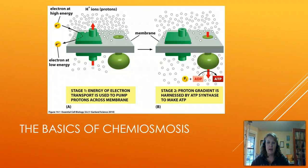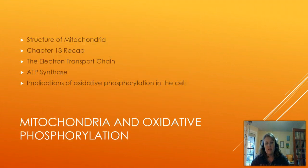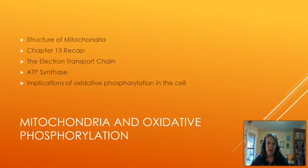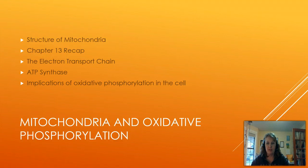This should be what you got out of your Biology 201 and other early biology classes. Now let's talk about the mitochondria and oxidative phosphorylation. For the rest of the topic, we're going to review the structure of the mitochondria, revisit chapter 13 to make sure we're all on the same page, then dive into the electron transport chain, look at the ATP synthase enzyme, and talk about the implications of oxidative phosphorylation in the cell.